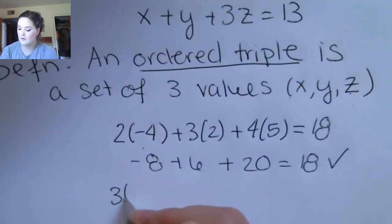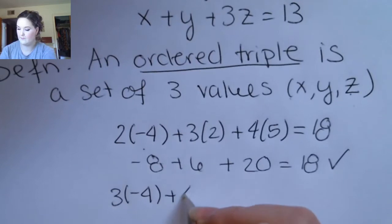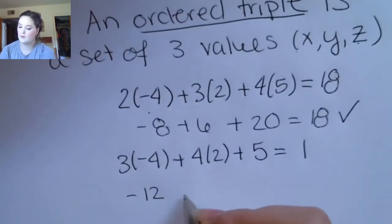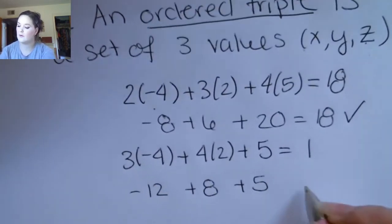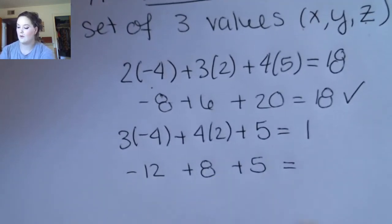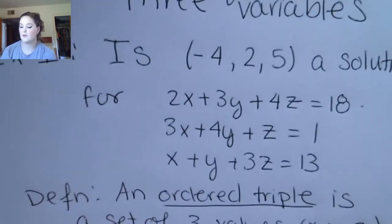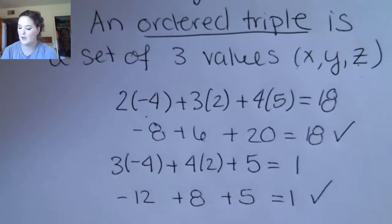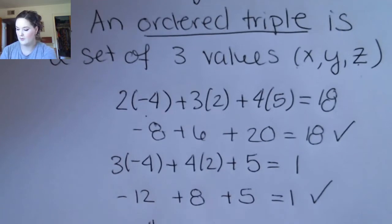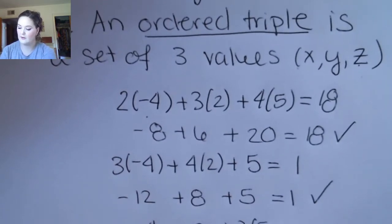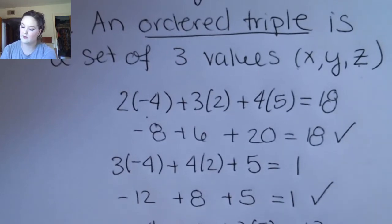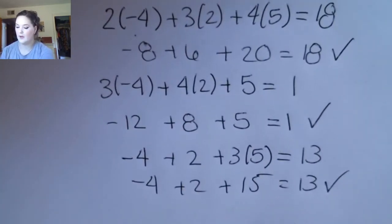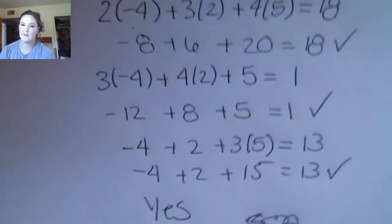We'll check the second one. This is negative 12 plus 8 plus 5, and we want to know if this is 1 — yes. So this is a solution to the first two equations, but you have to check them all. It's not enough to check some of them. For the last one, we'll have negative 4 plus 2 plus 3 times 5, and we want to know if this is 13. It is. So our answer is yes, this is a solution.